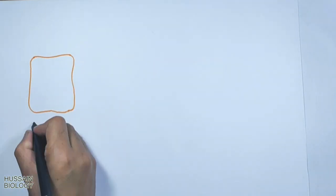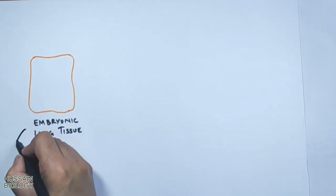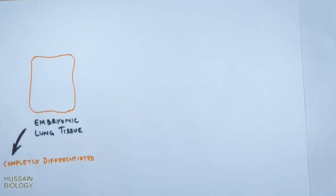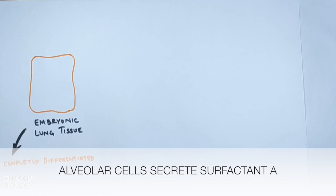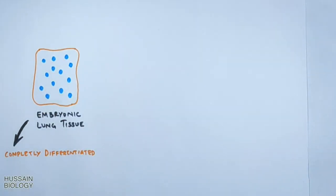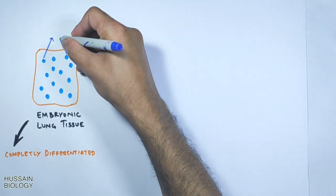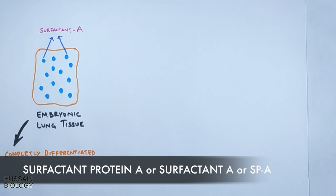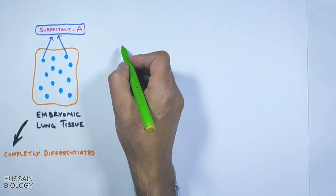In this diagram we have the embryonic lung tissue, which is completely differentiated. Mostly in late gestation, the alveolar cells of the lungs start to secrete a surfactant molecule into the fluid within the lungs. This surfactant molecule consists of specific proteins and phospholipids such as sphingomyelin and lecithin, and this surfactant is known as surfactant protein A, or SPA.